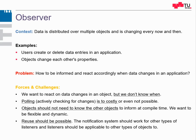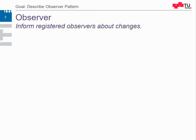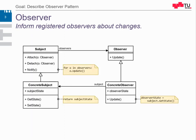The solution to this is the Observer design pattern. The basic idea is we want to inform registered observers about changes — we could also call them listeners. First, we have a subject. A subject contains the data which changes, and from the subject is derived the concrete subject. We are no longer bound to a concrete instance or a concrete class; we are bound to the interface. This interface defines three methods or three basic ideas.